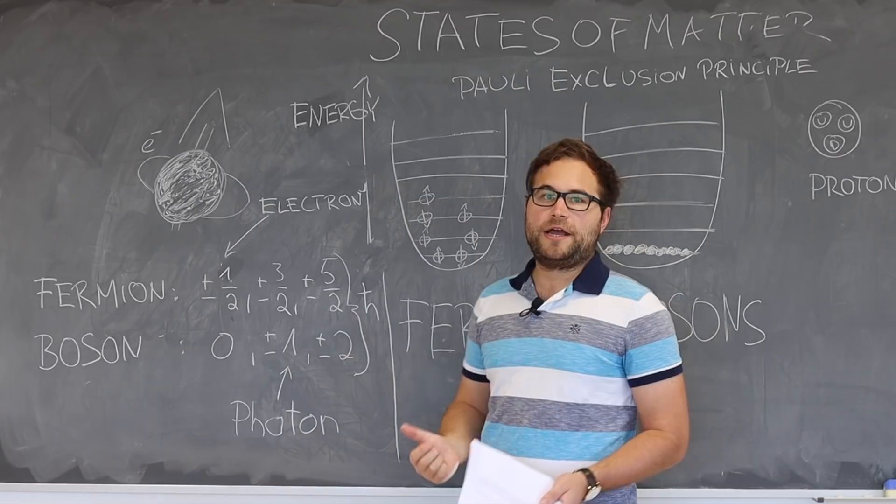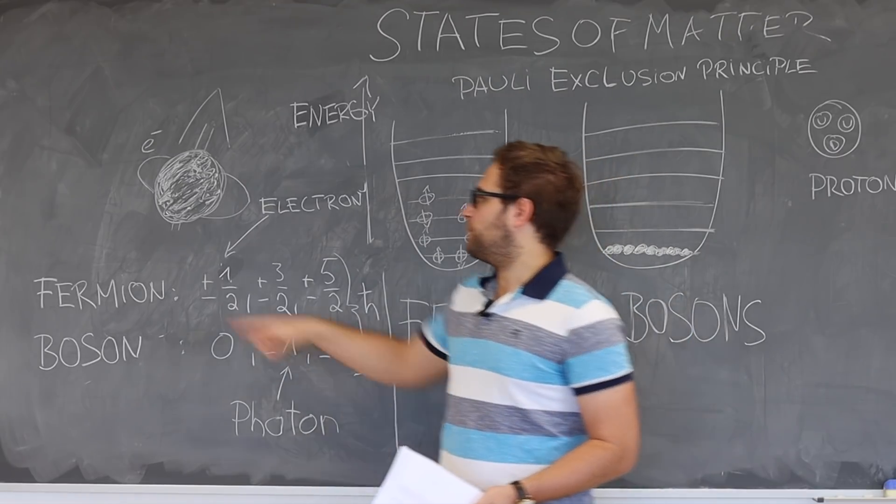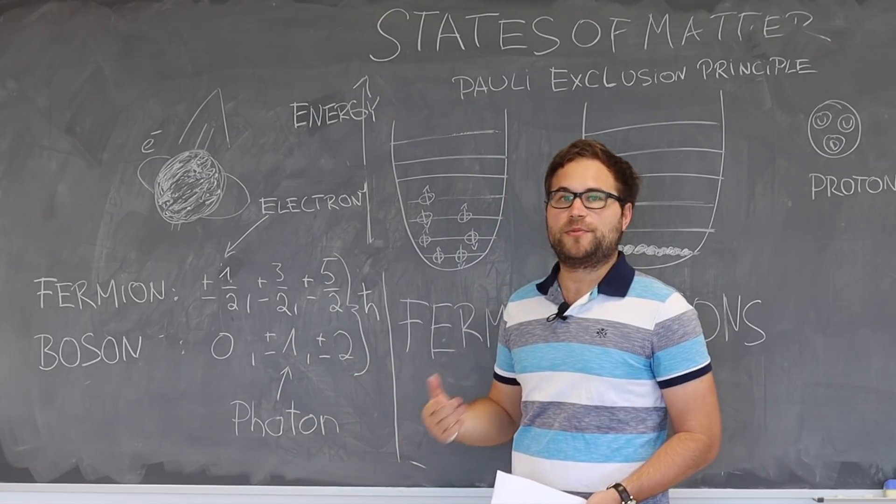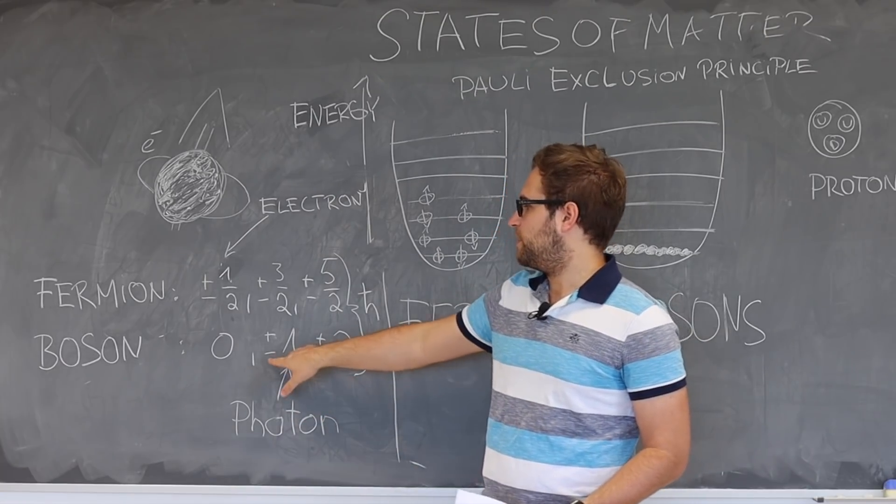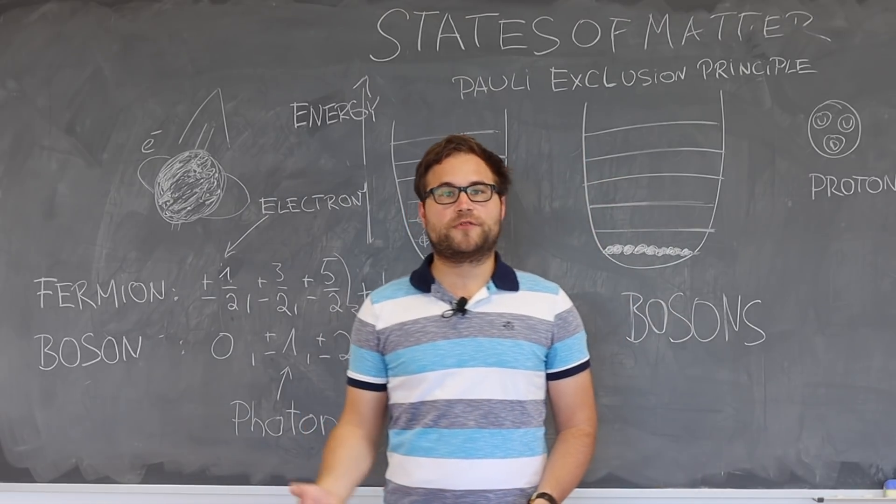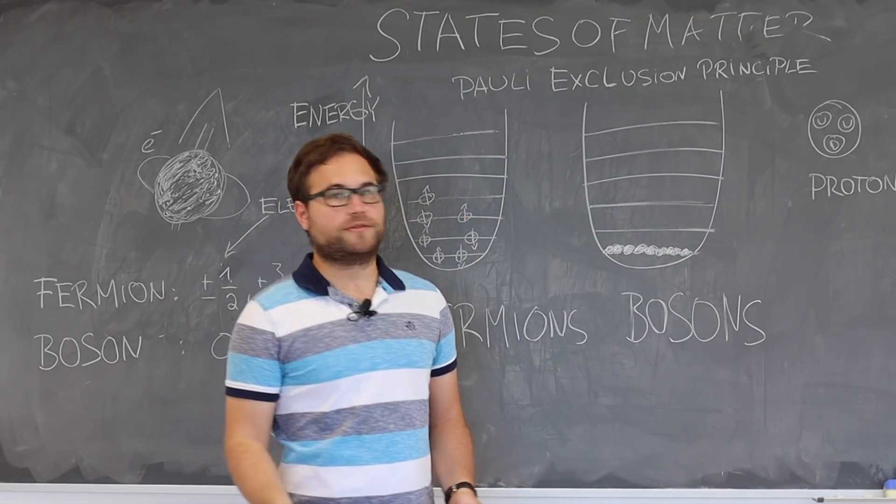Bosons are particles whose spin takes integer values of Planck's constant, for example zero, plus minus one, plus minus two. An example for a fermion is the electron which has spin plus minus one-half, and an example for the boson is the photon which has spin plus minus one. There is an important difference between bosons and fermions.